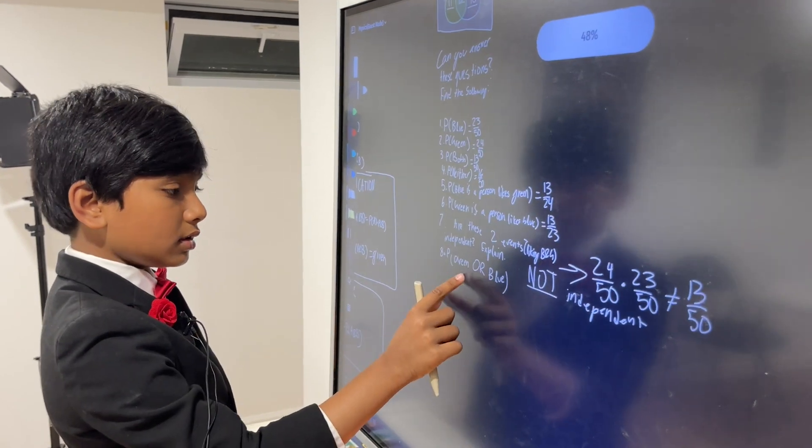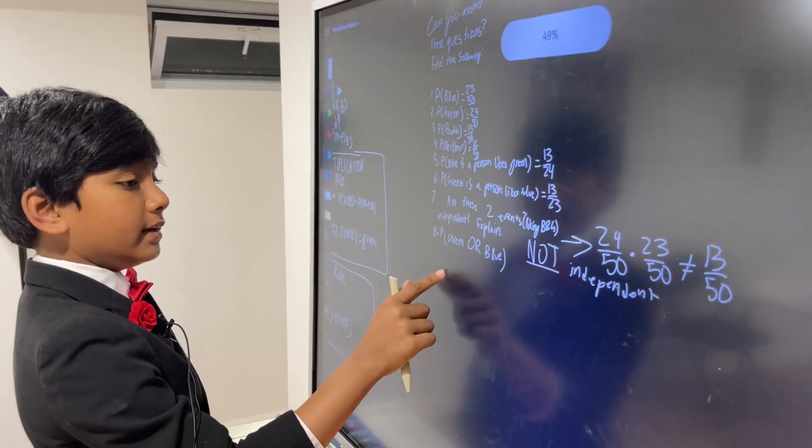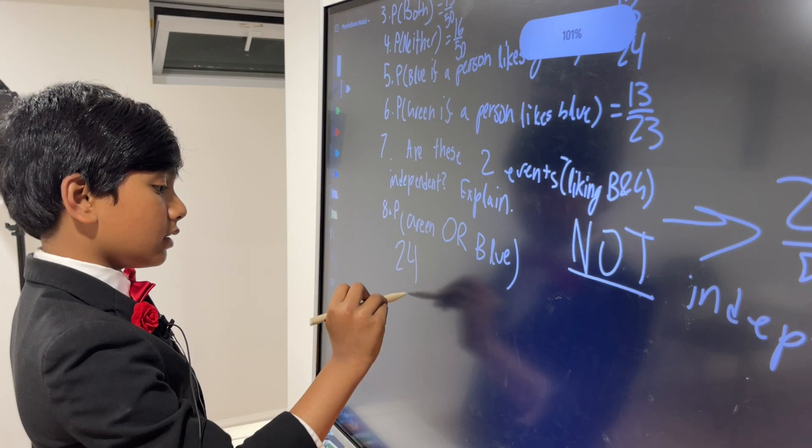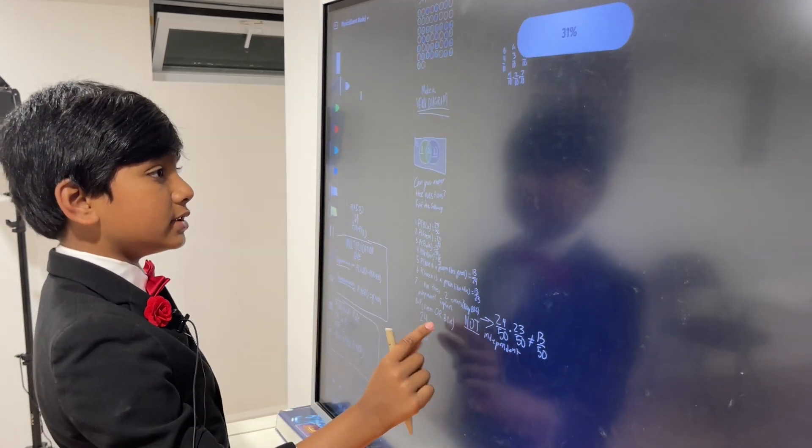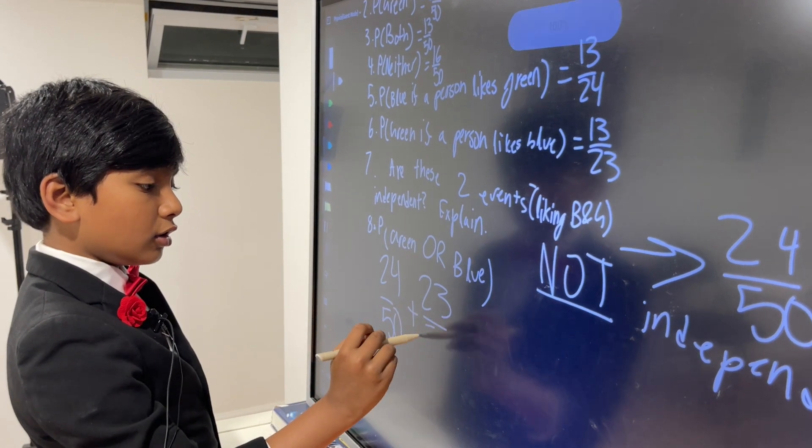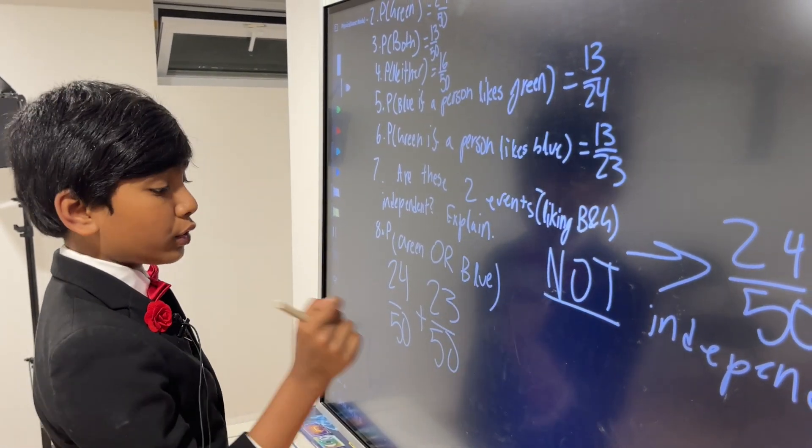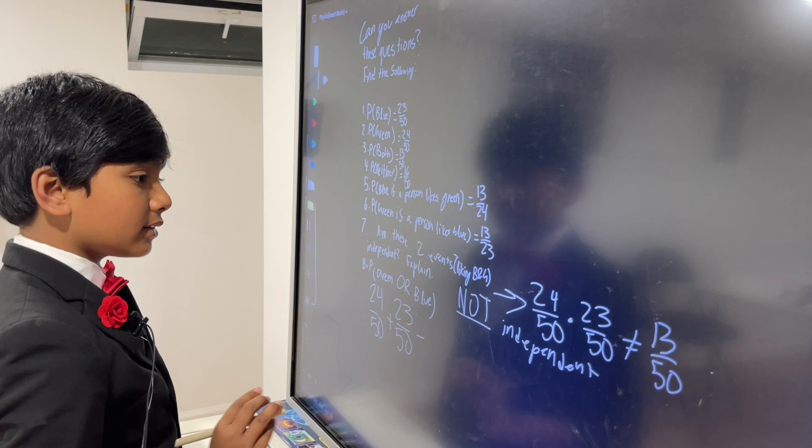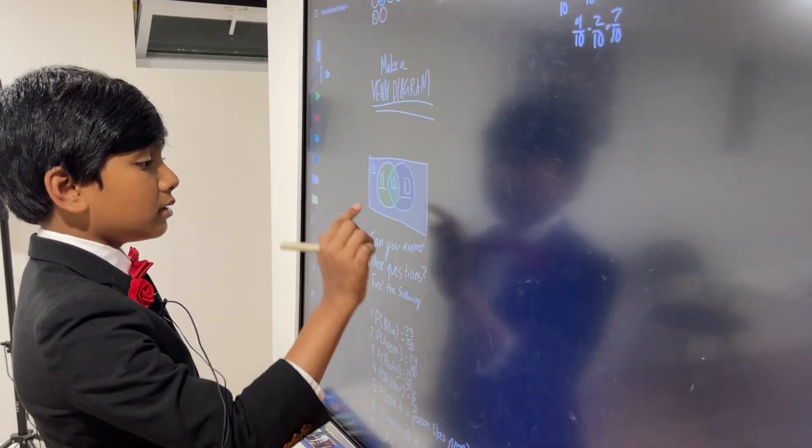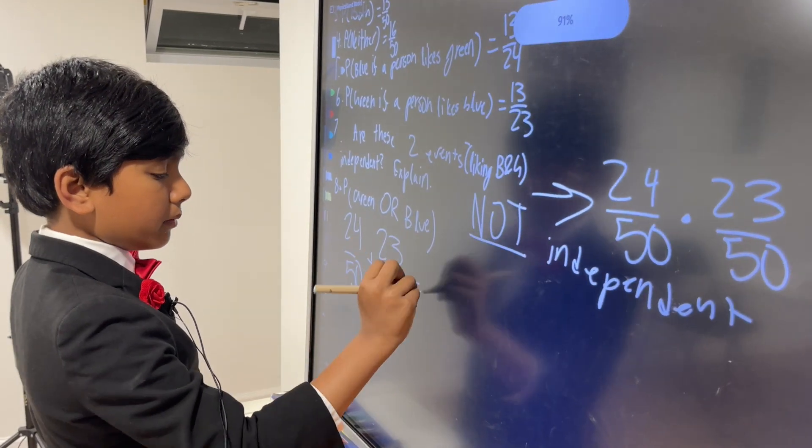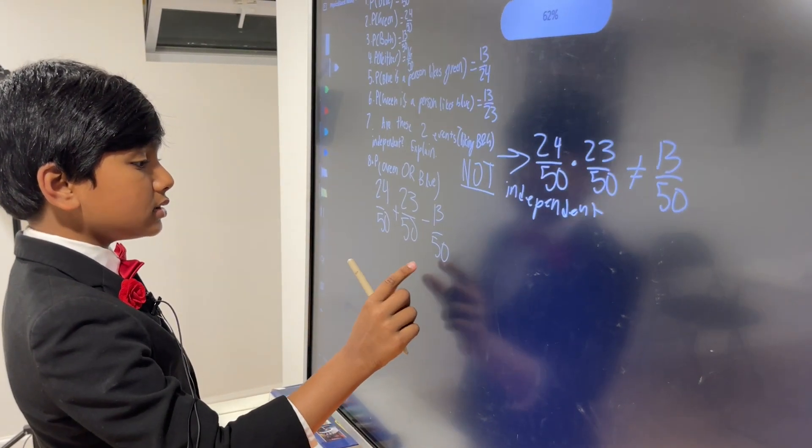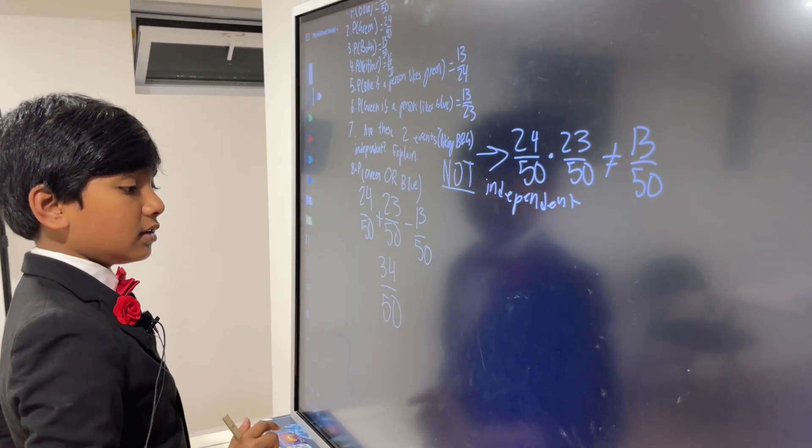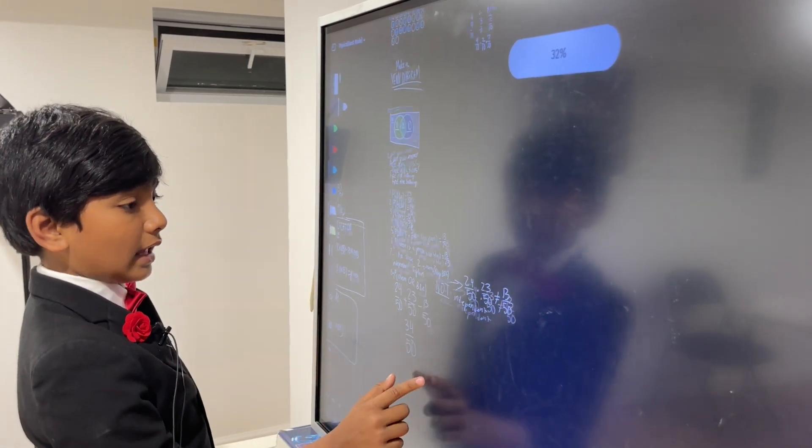Alright. So, green or blue would be, well, there's the probability of A, which is twenty-four out of fifty. There's the probability of B, which is twenty-three out of fifty. And hold up, this is like forty-eight or forty-seven. But wait, don't panic, because now we've got to subtract P of A and B, which would be thirteen. So, minus thirteen out of fifty. So, that gives us thirty-four out of fifty. So, that's the answer to all of these.